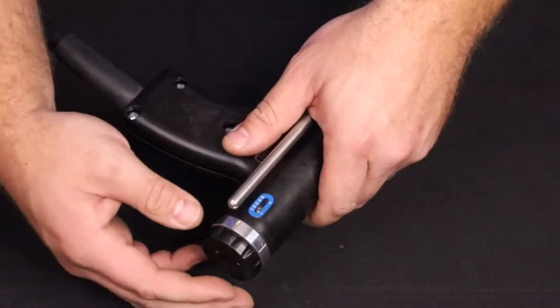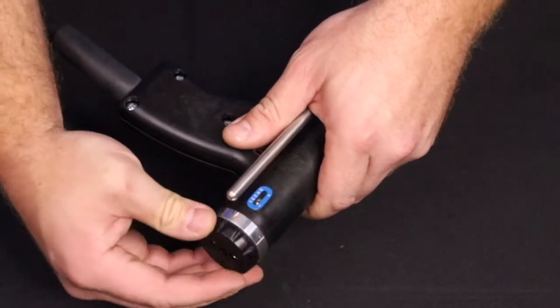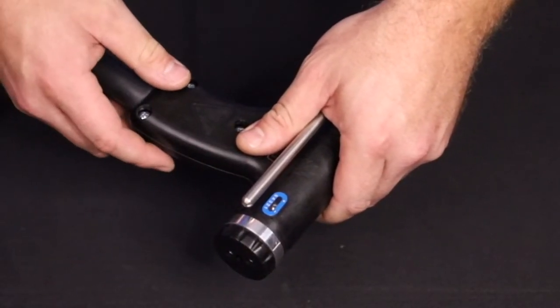To complete the setup, rotate the spring preload knob, located at the back of the gun, counterclockwise until it stops.